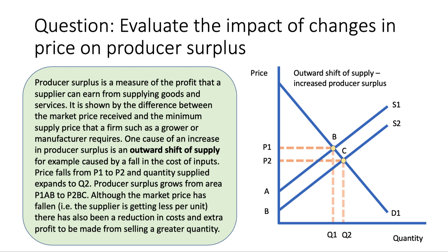Let's look at three aspects of this question. First, make a definition at the start: producer surplus is the measure of the profit — the return — that a supplier or business can earn from supplying goods and services. We normally show producer surplus by the difference between the market price the firm gets and the minimum price a business, such as a farmer or manufacturer, requires to enter the market. You show the level of producer surplus by the area underneath the price and above the supply curve.